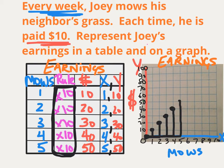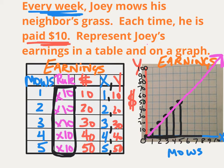I can see on this graph that every time the number of mows goes up by 1, the amount of money goes up by 10 — a multiplicative relationship. When I connect all my data and draw an arrow, that shows that if Joey continues to mow, he'll continue to earn more money. Looking at the graph, if Joey mowed a ninth time, I could come up and see he would have made $90 by that ninth mow. I can make predictions using my graph.